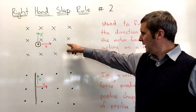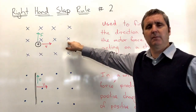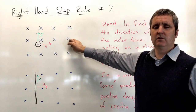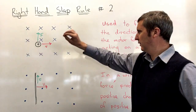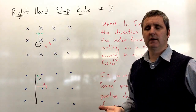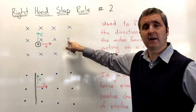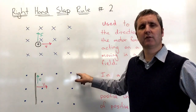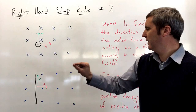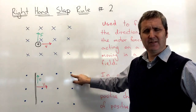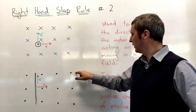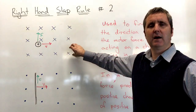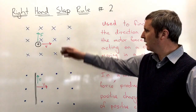First, let's look at these two magnetic fields. This cross-notation represents a magnetic field going into the paper or board — we can think of it like looking at the back of an arrow, seeing the fletching. The dot notation represents magnetic field lines coming out of the board. So these are the notations to show magnetic field going into the page and coming out of the page.